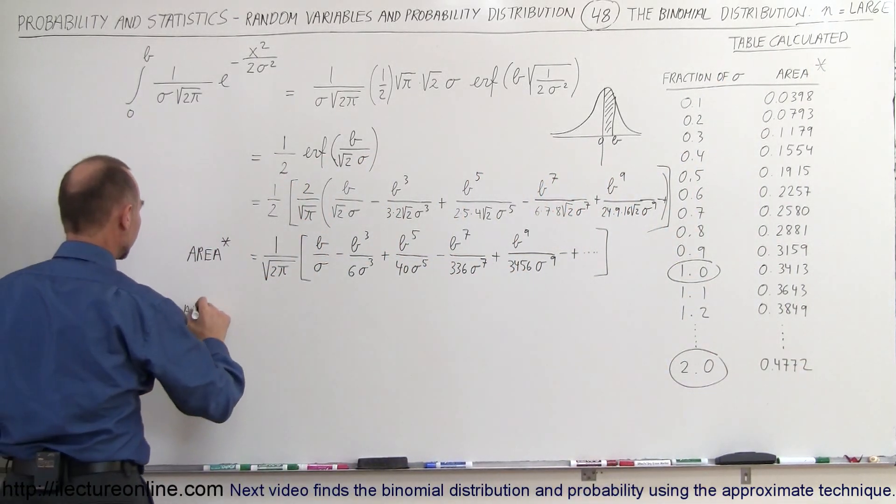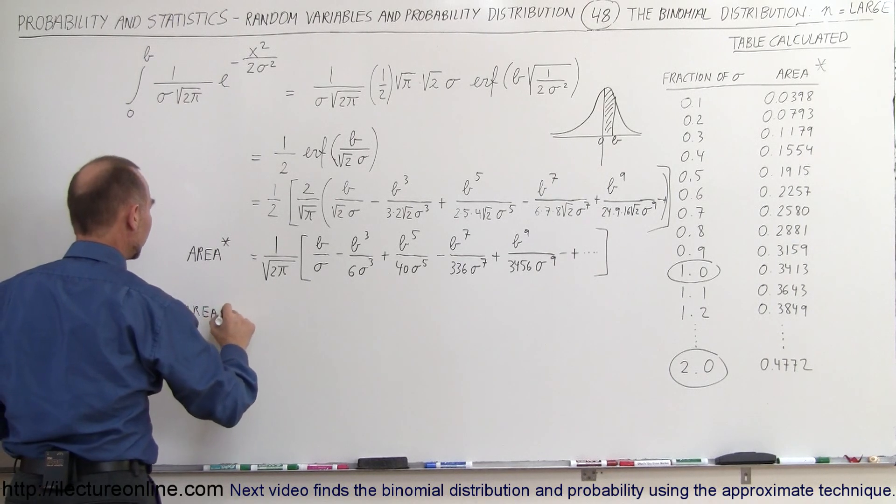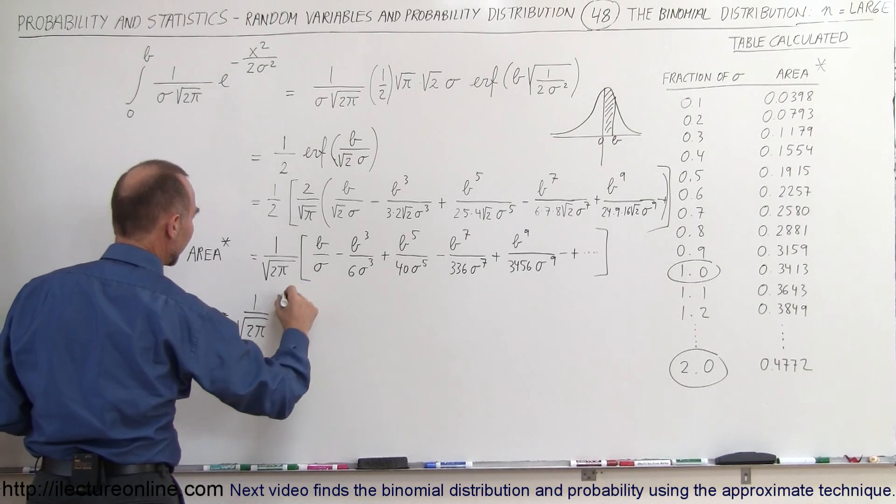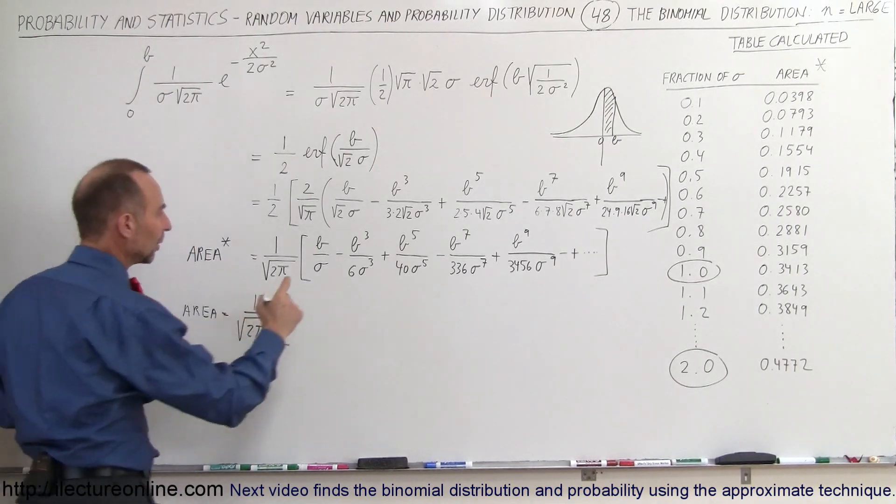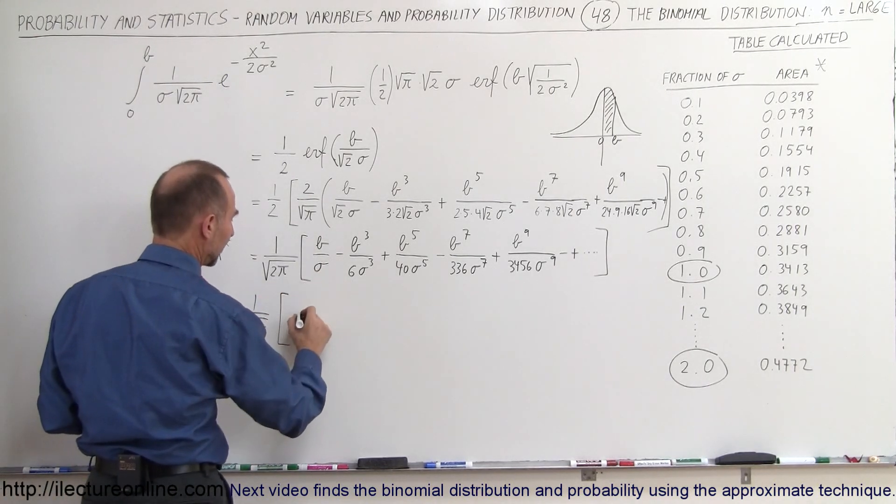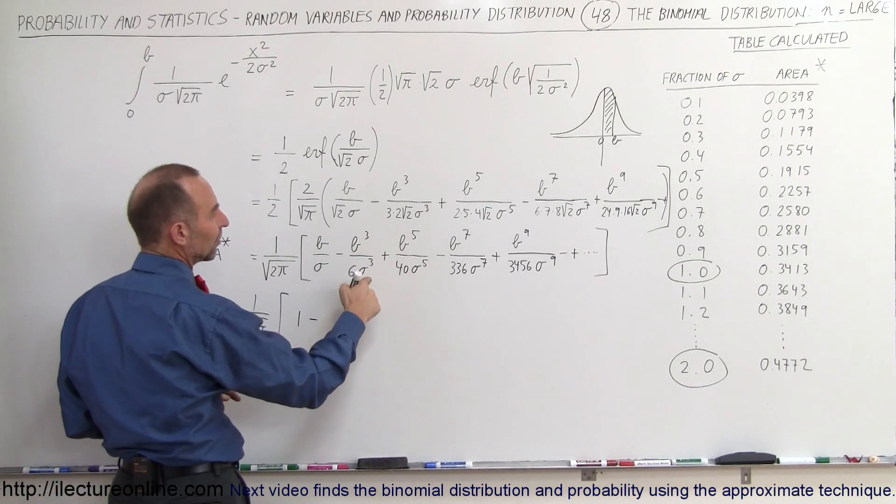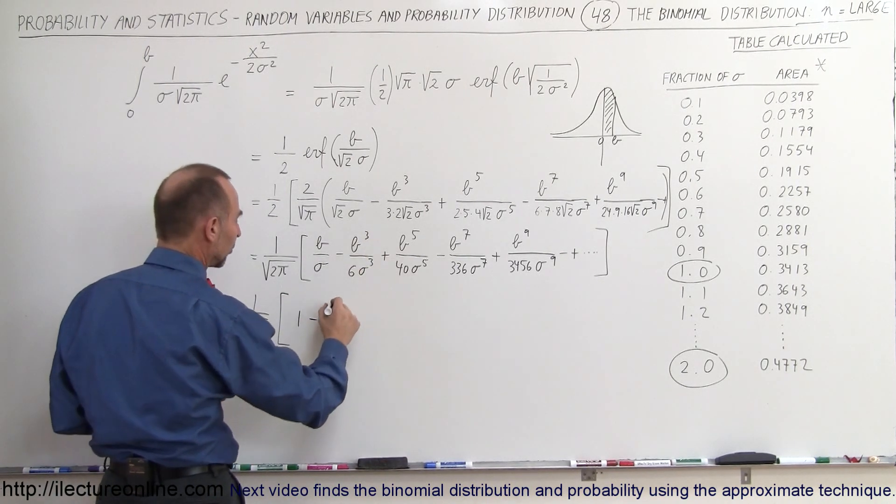So the area is going to be equal to one divided by the square root of two pi times, since B is going to be one sigma, it's going to be sigma divided by sigma, which is one minus, that will be one sigma divided by one sigma, and it's cubed, that's still one, so that's one over six.